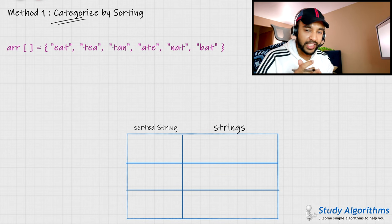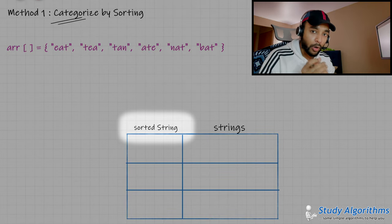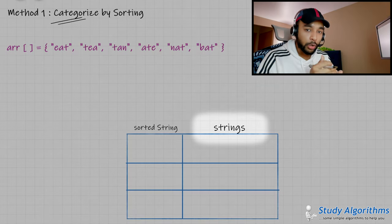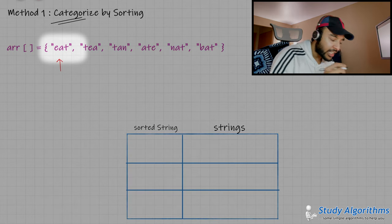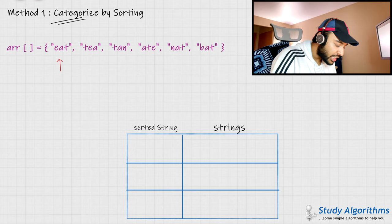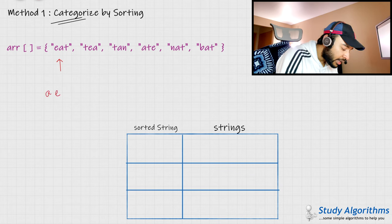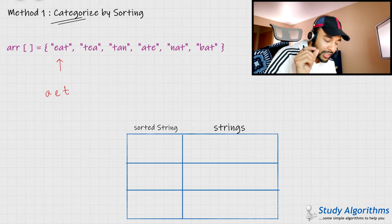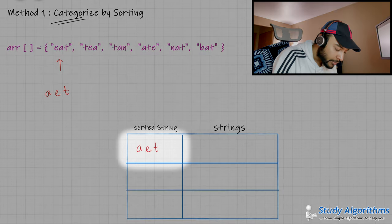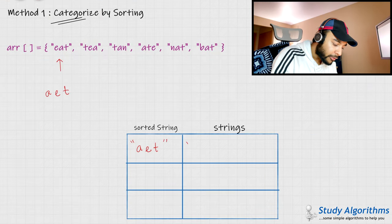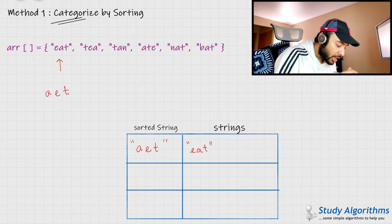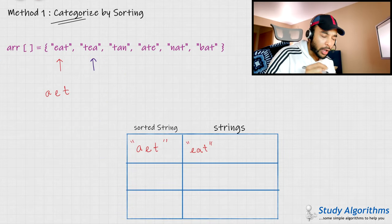Can we use this property to our advantage? I am taking a map where I can group all of these strings. For the key part of my hash map, I would be taking a sorted string, and for my values I would be having these groups. Starting with the first string 'eat' — I sort this word and get 'aet'. I check my map; if I cannot find this word in my keys, I add it as a key and add the corresponding original string 'eat' to the values.